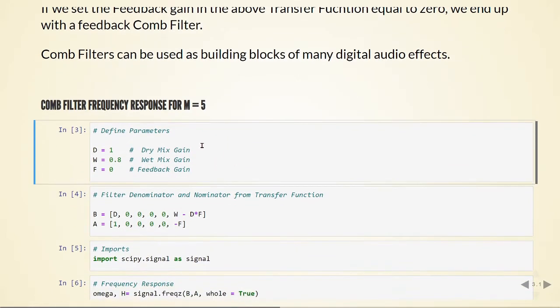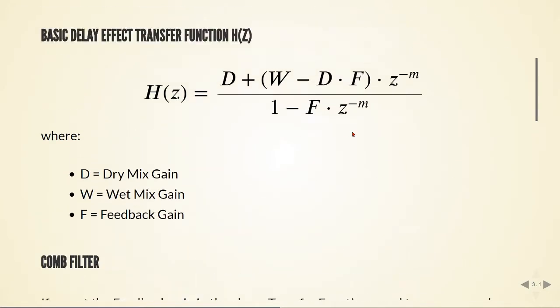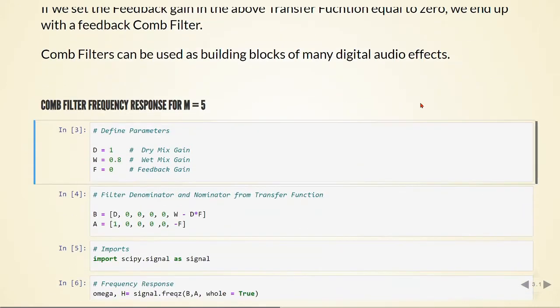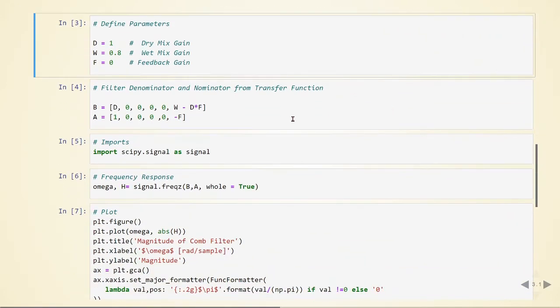Here I'm defining the parameters: the dry mix gain equals to 1, the wet mix gain equals to 0.8, and the feedback gain equals to 0. So we are not having any feedback here. We have a direct version of the signal and a delayed version of the signal.